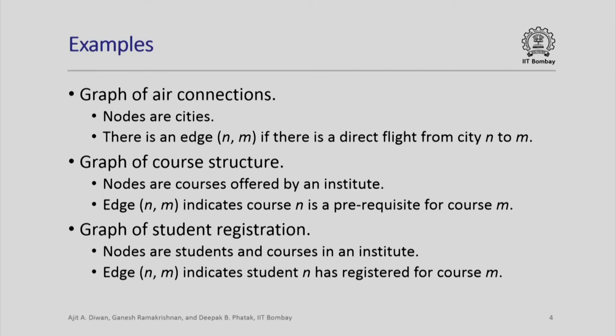You can do course m only after completing course n, and this relation between courses is indicated by the set of edges in the graph. Similarly, if you look at a graph of student registration, the nodes can be of two types — students as well as courses in the institute — and an edge (n, m) indicates that student n has registered for course m. The registration data in an institute can also be represented as a graph where the nodes are students as well as courses.